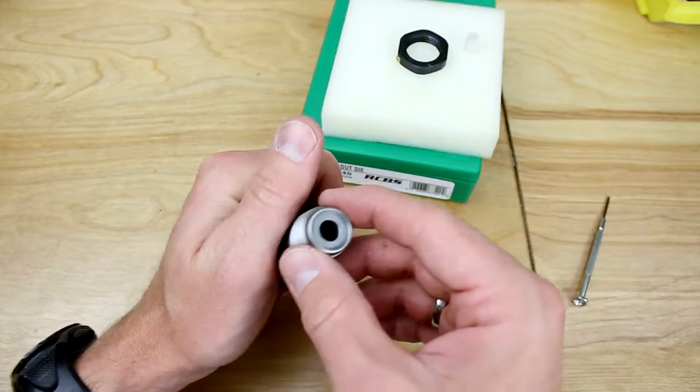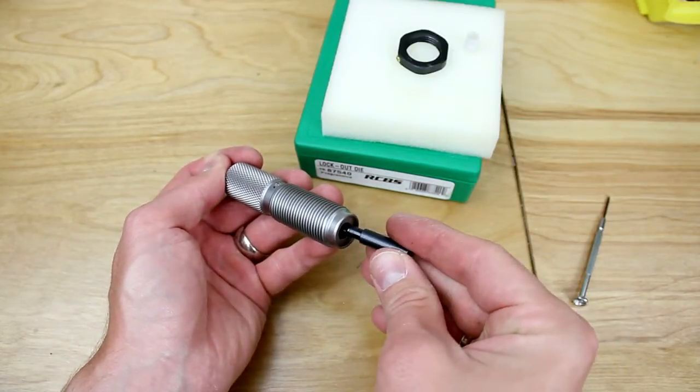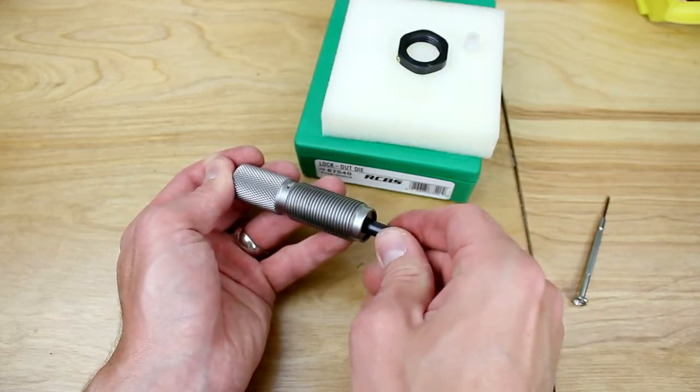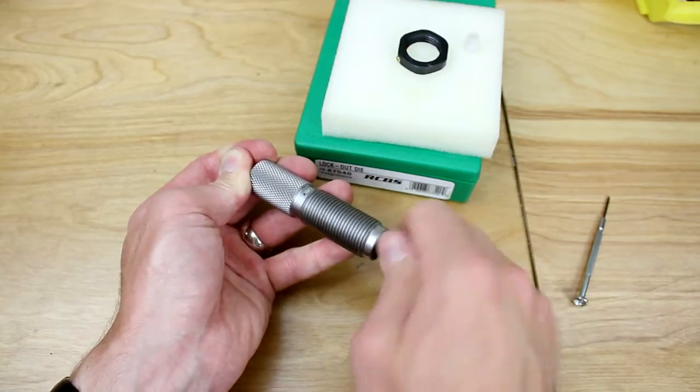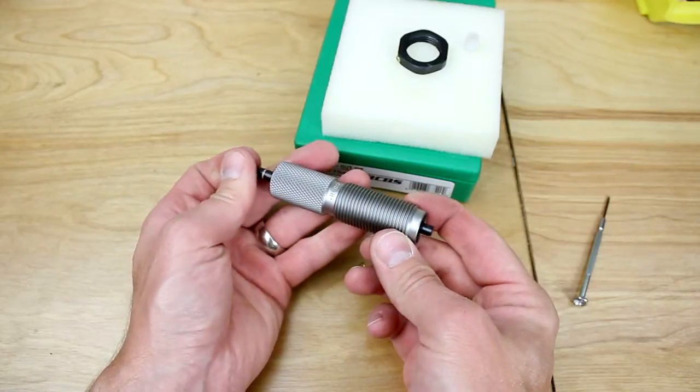It snaps into place. And now we can screw the actuation rod back together. Oops, got it the wrong way there. There we go. That is how we adjust the level that we are validating of the powder.